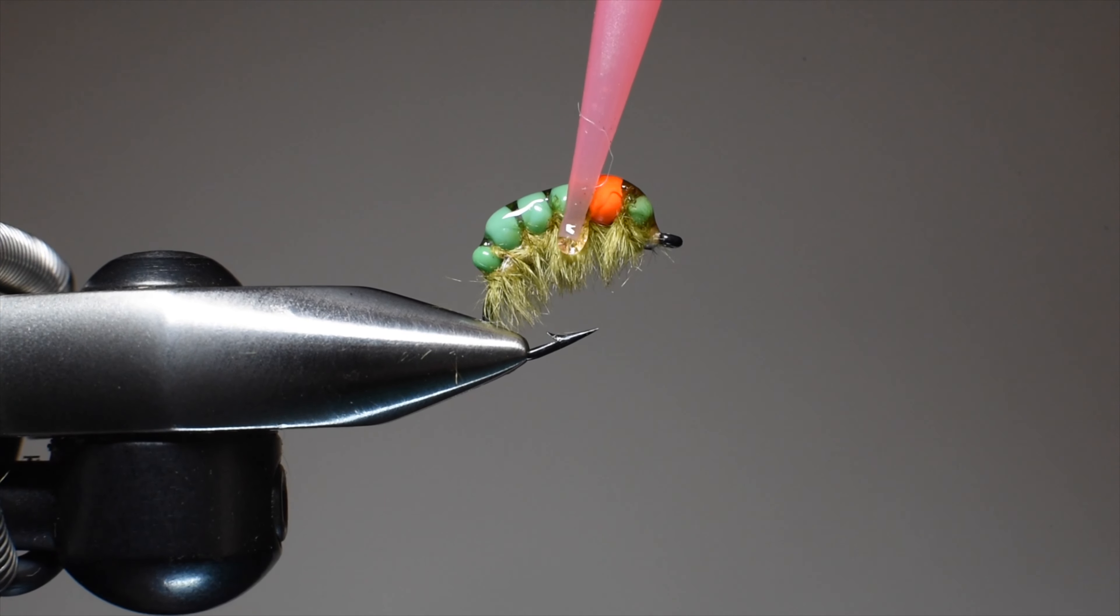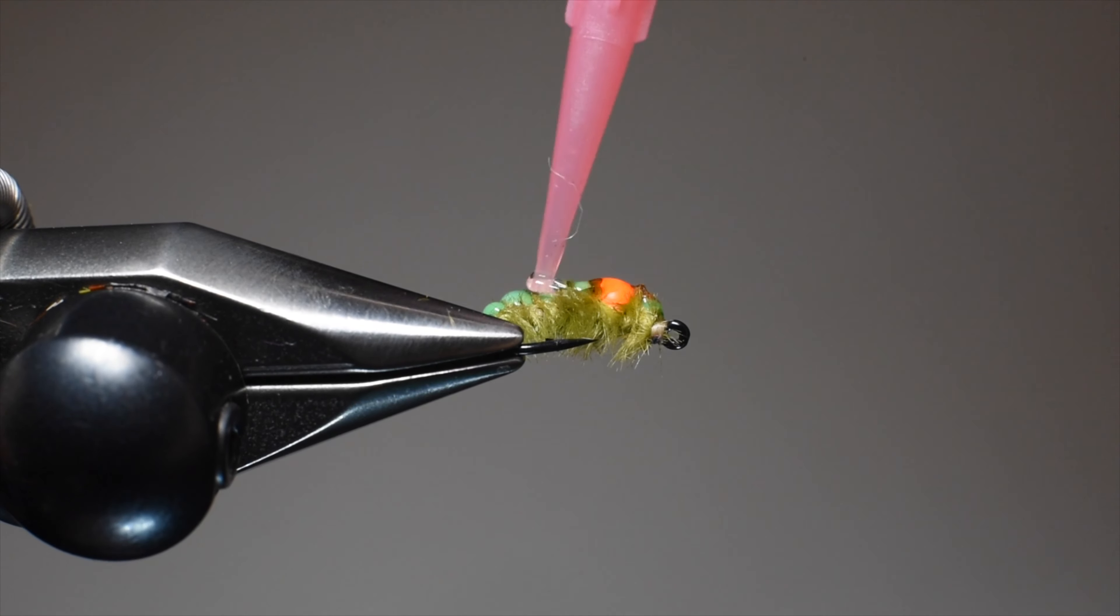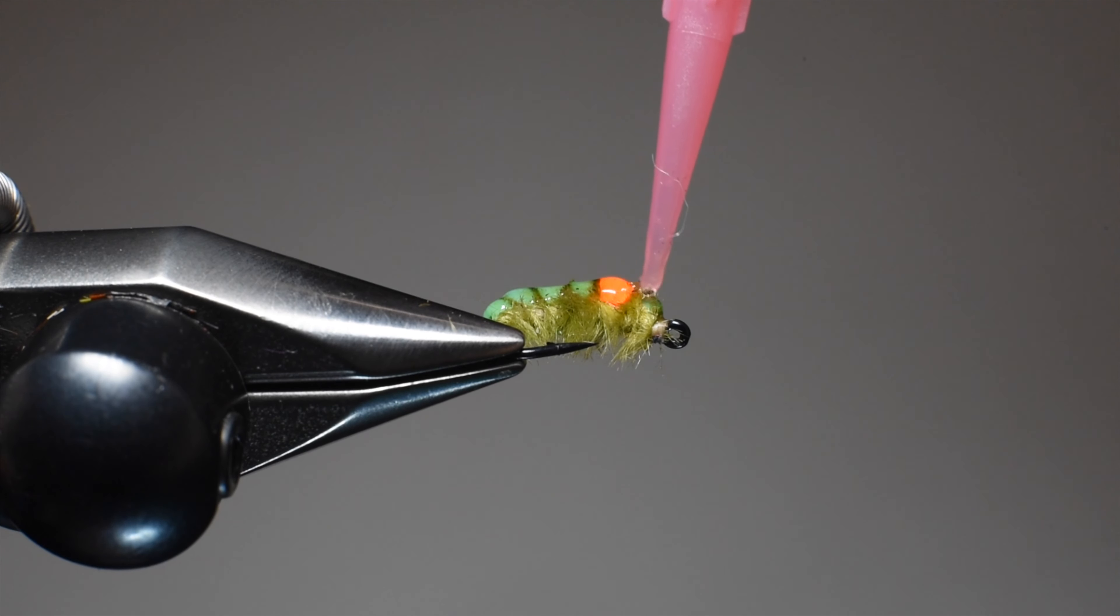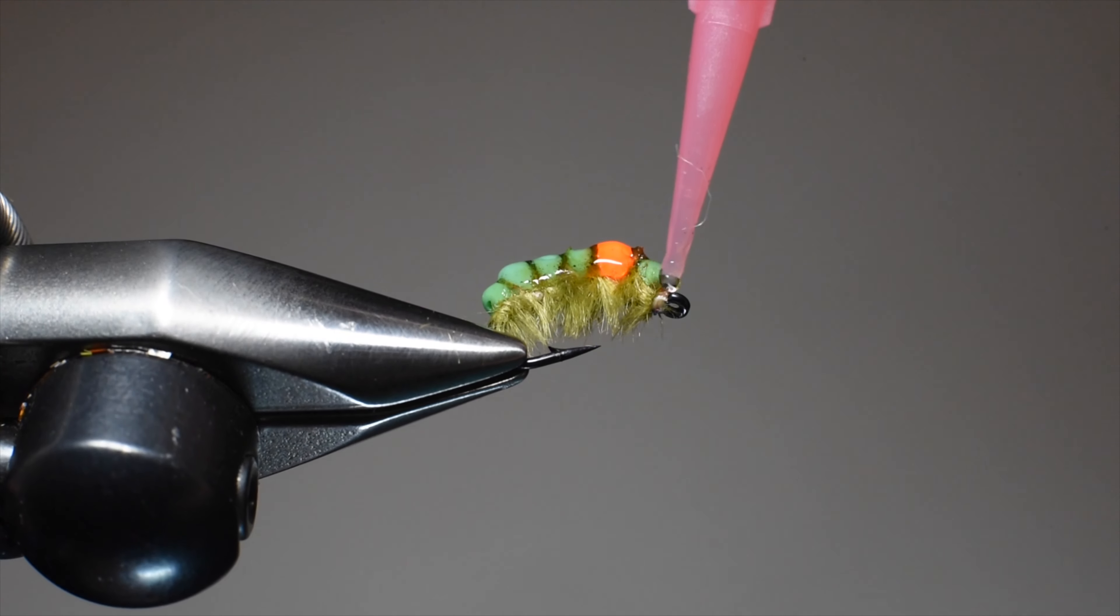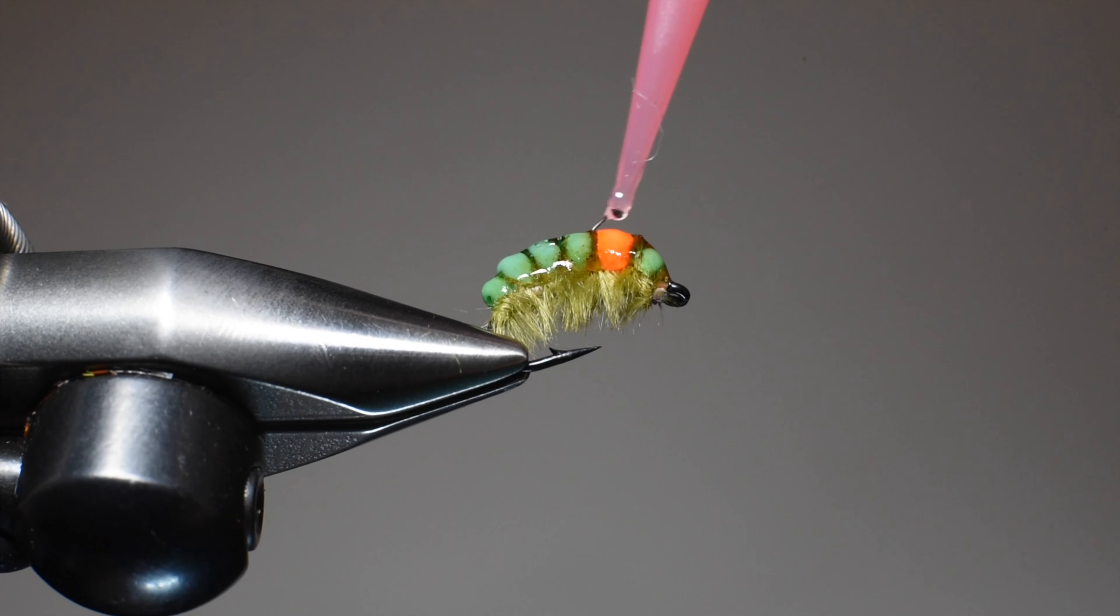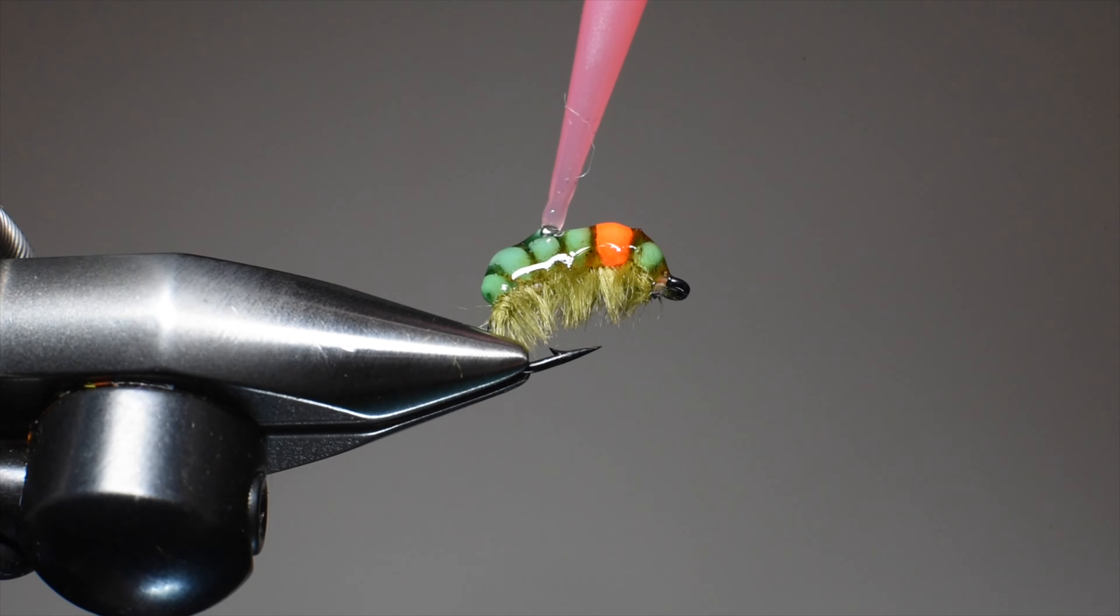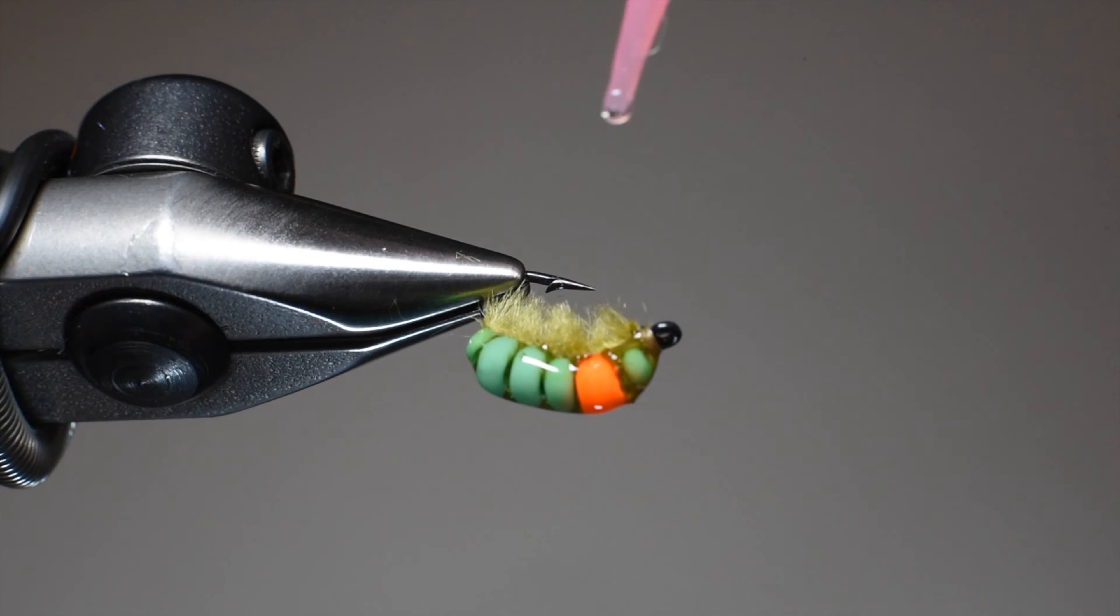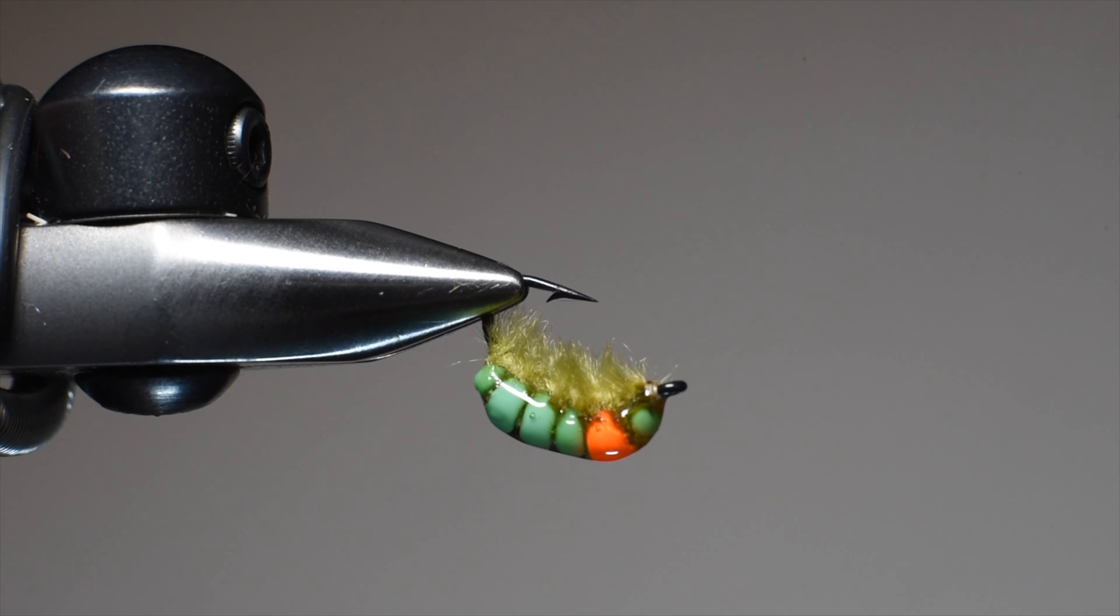Some of this top resin will seep down between the beads, which is what you want. Make sure you don't get any resin on the ostrich. That's why we burned the threads down to our stopping point. I can use the tip of this nozzle to work it around. We're building the profile of what we want.